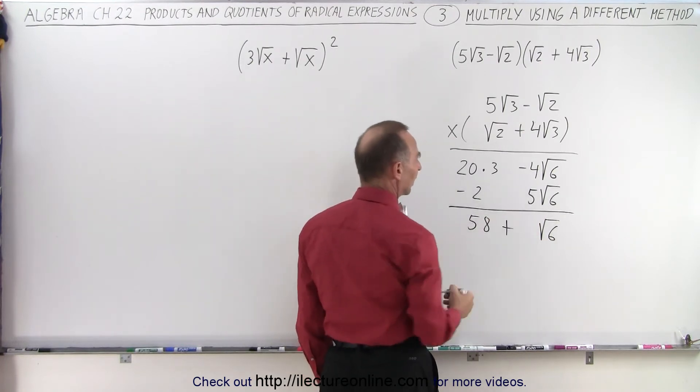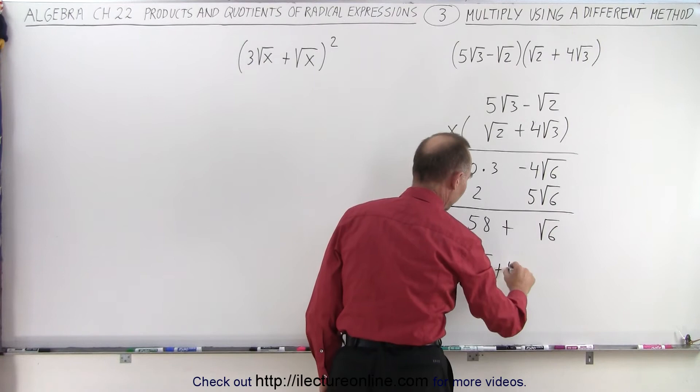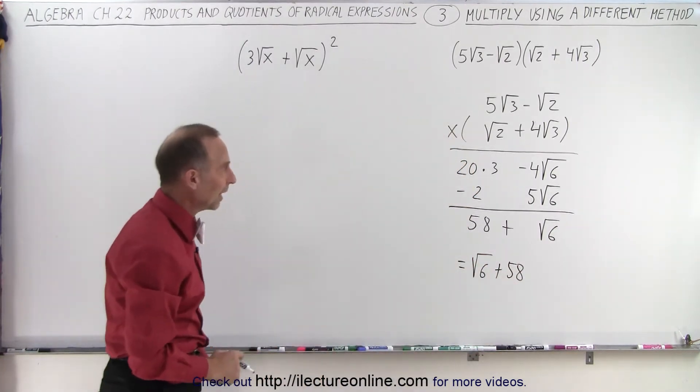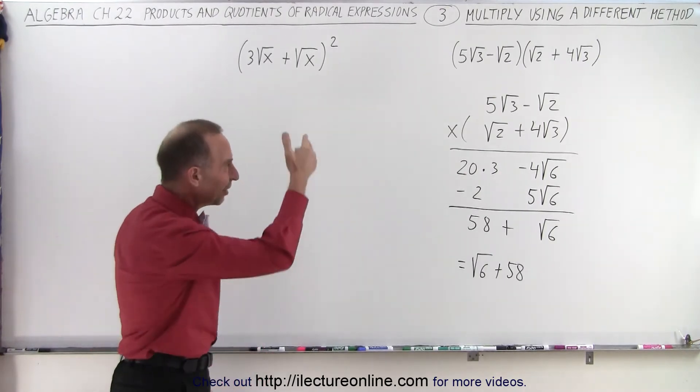So we simply add them together: the square root of 6 plus 58. It doesn't matter which one we put first and which one we put last. So sometimes putting it in the vertical direction does help see through the problem.